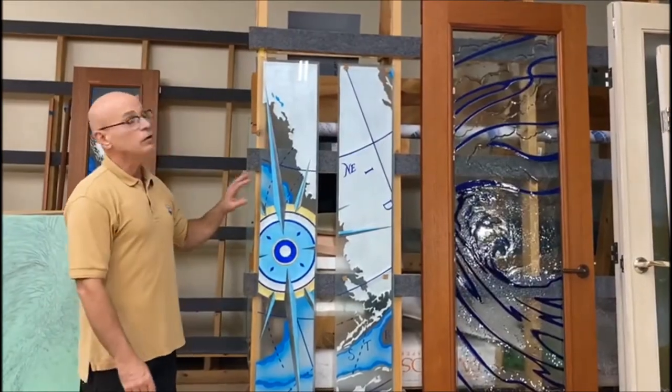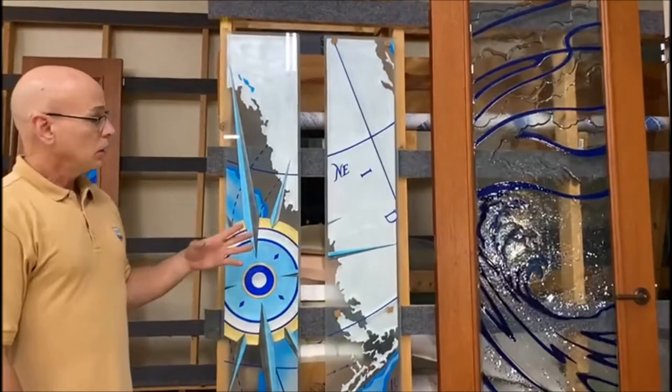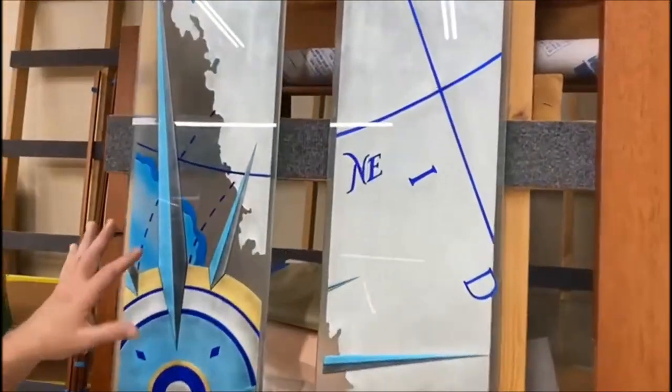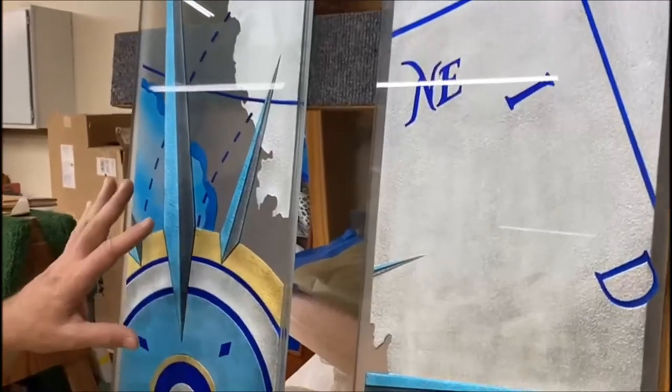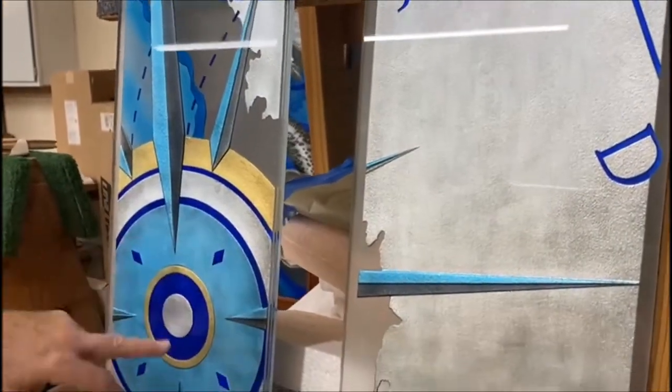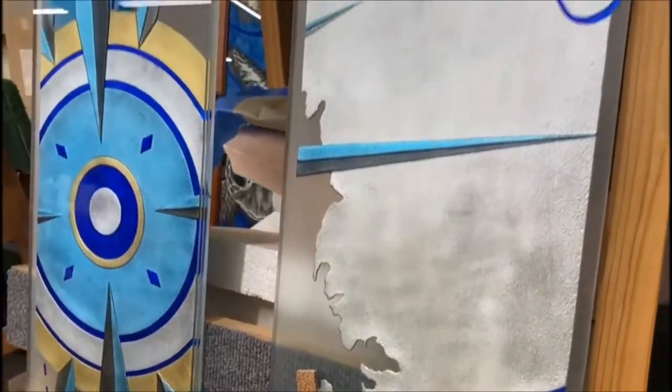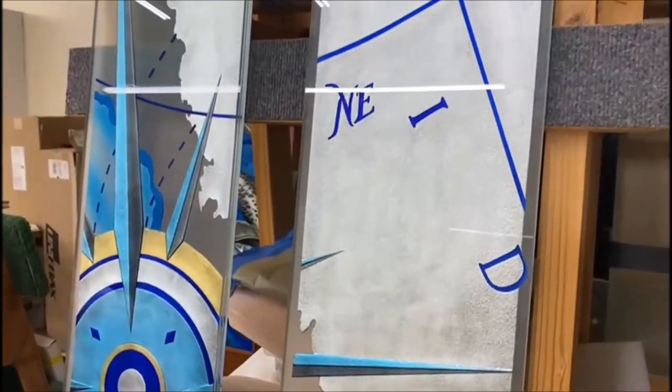So these are the inserts for the master bedroom doors. They have not been installed yet. You guys saw in the earlier part of the video these doors on the table when we had just applied the blue, the cobalt blue color. These are the doors completed now, not installed into the doors as yet.